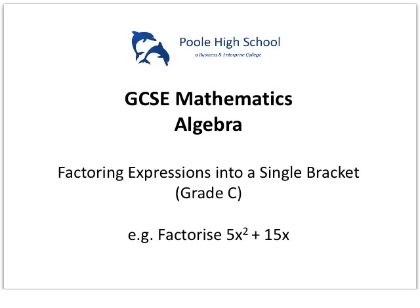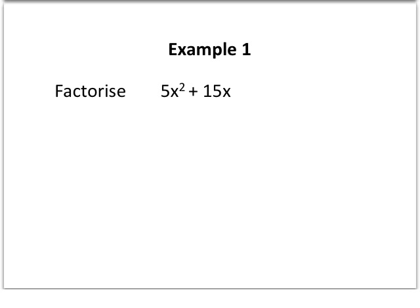We are going to look at examples like 5x² plus 15x and talk through the process of how we factorise expressions like this back into a single bracket. So starting with 5x² plus 15x, the trick here is to break each part of the expression down as far as it will go. So in terms of the 5x², I know that's 5 times x times x.